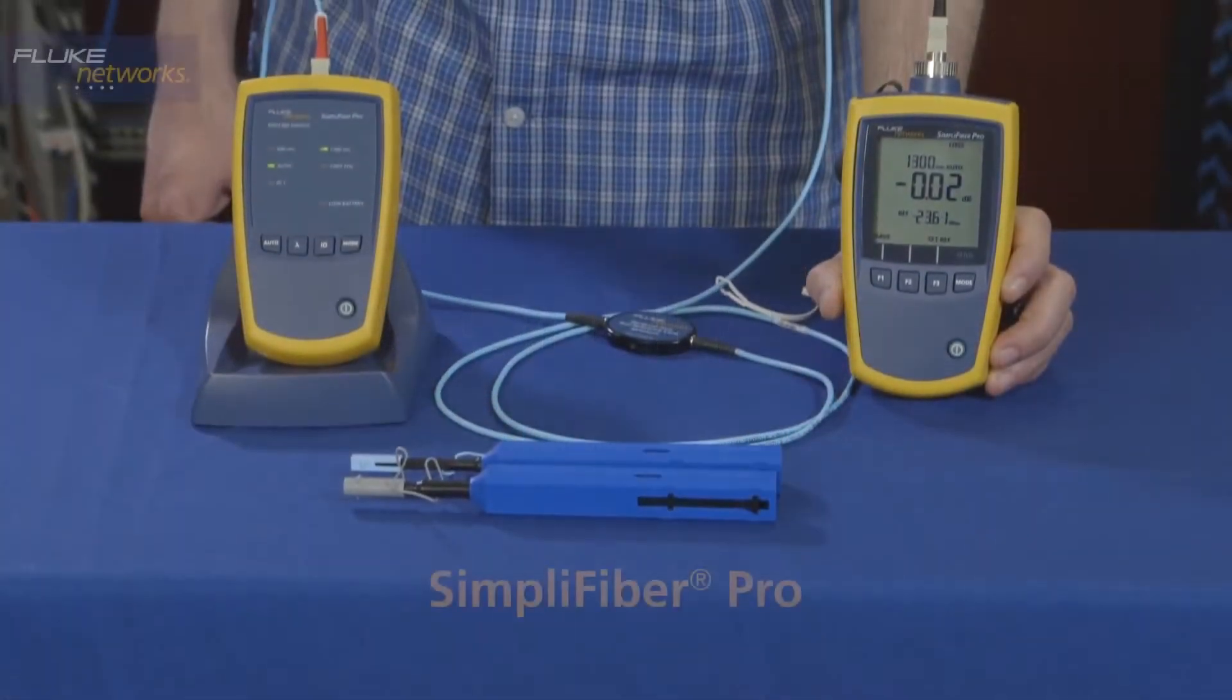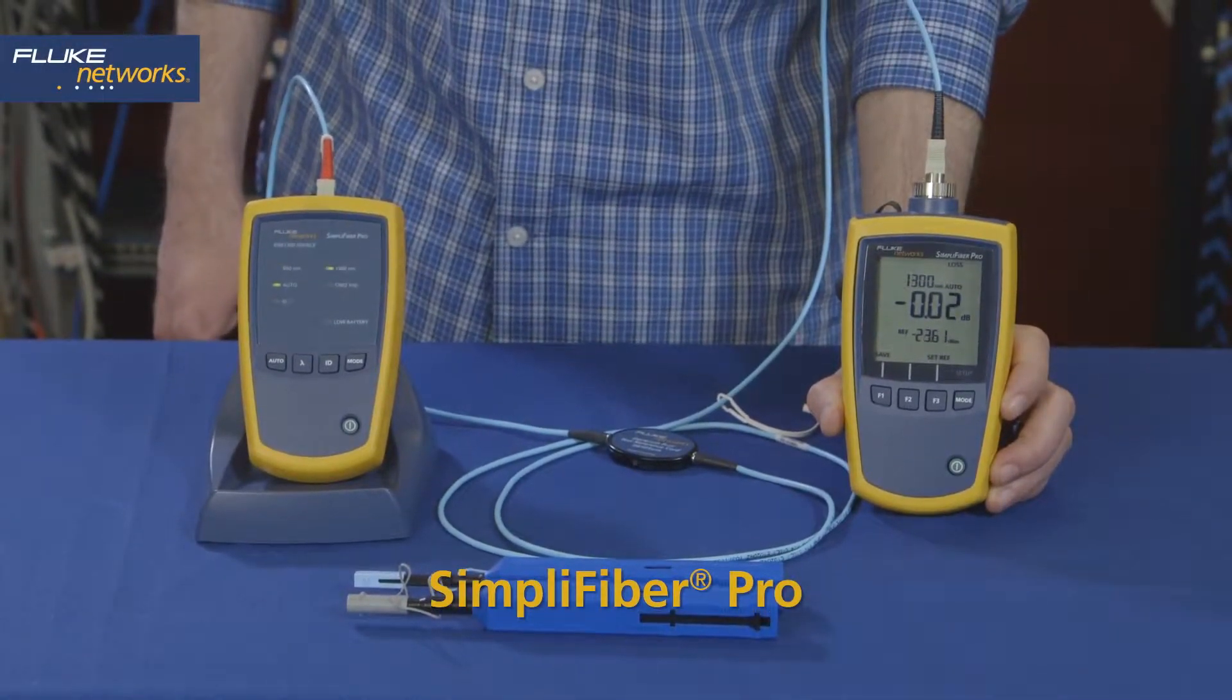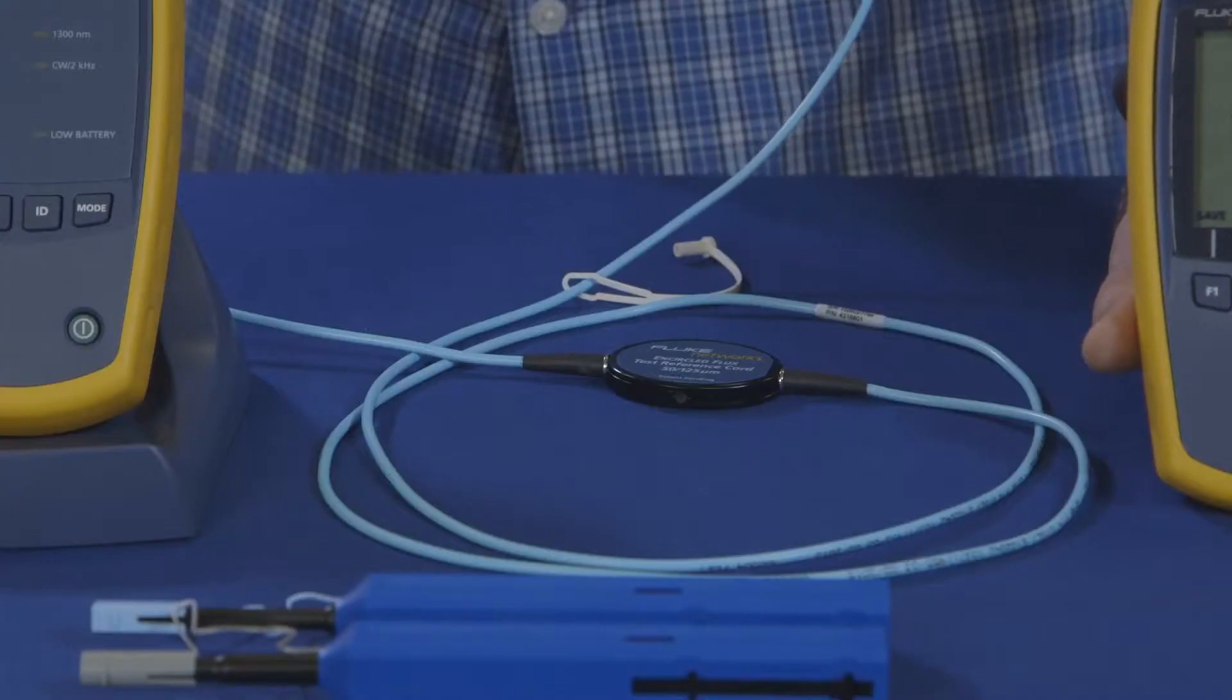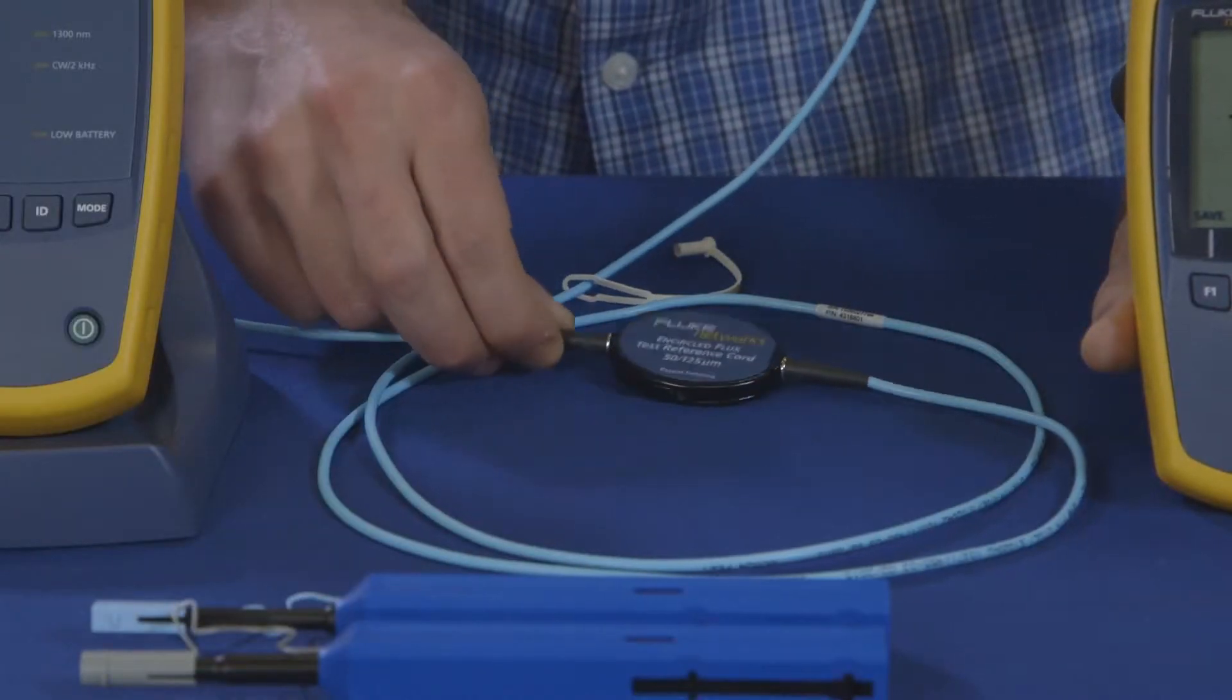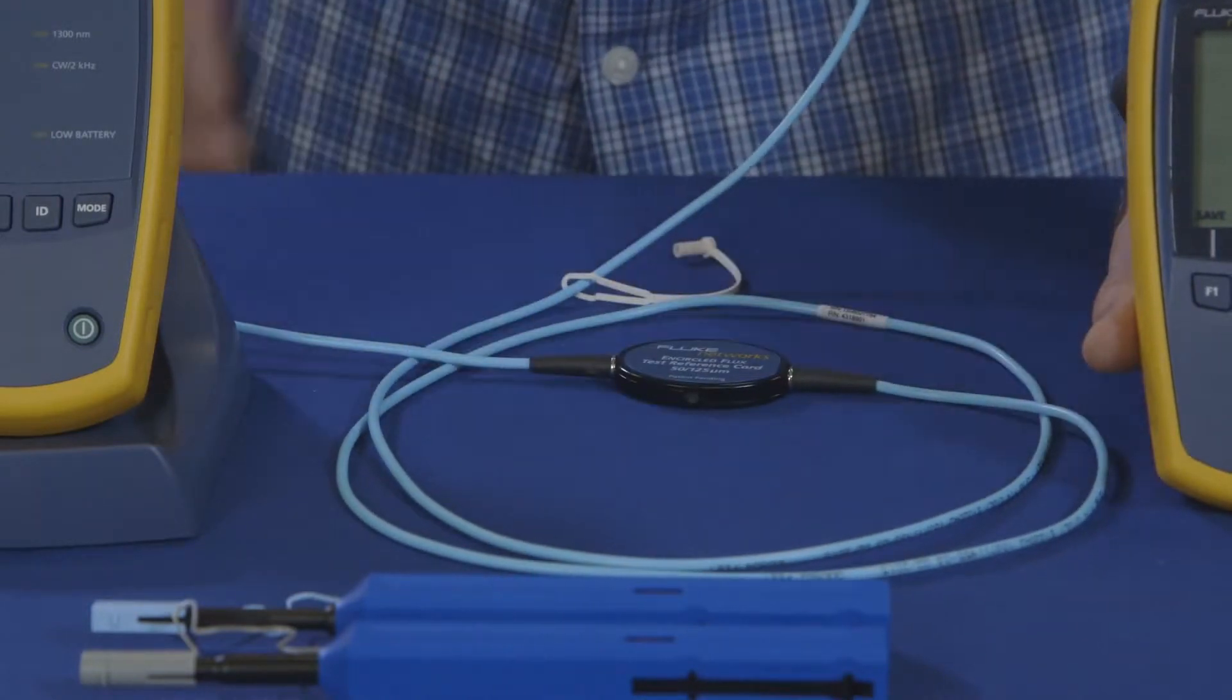We're going to show you how to use the Fluke Network SimpliFiber Pro to take a loss measurement. We'll use our SC interchangeable adapter and our multi-mode encircled flux test reference cords, or TRCs, which we've already cleaned and inspected.